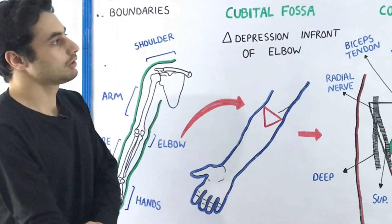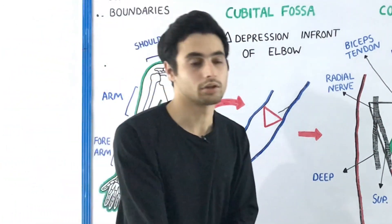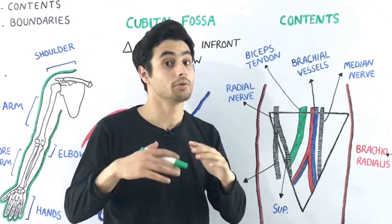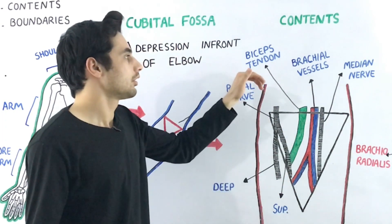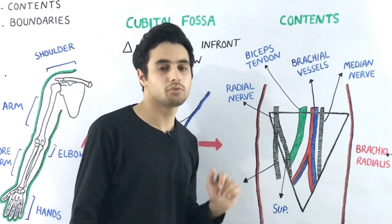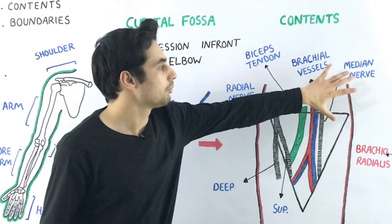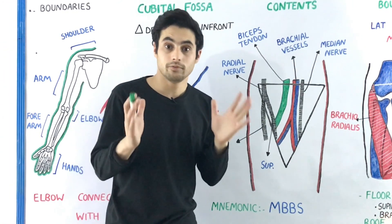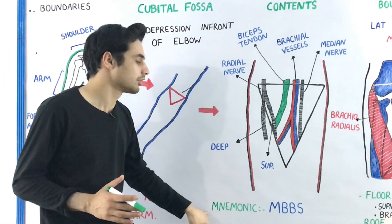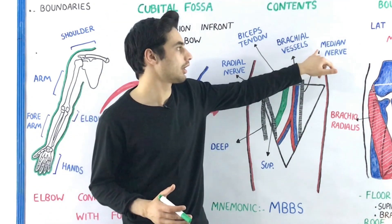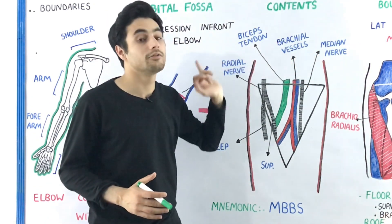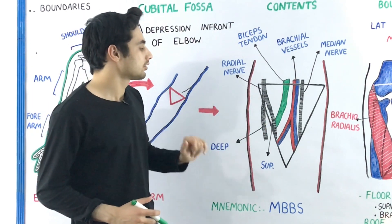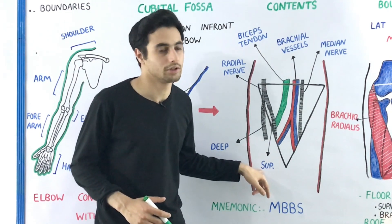The contents of the cubital fossa include the median nerve, the brachial vessels (which include the brachial arteries and veins), the biceps tendon, and the radial nerve. You can remember these contents using the mnemonic MBBS: M for the median nerve, B for the brachial vessels, B for the biceps tendon, and S for the superficial radial nerve.